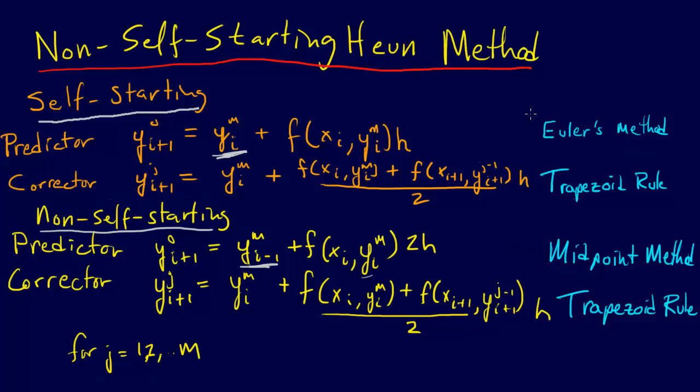And so the big difference here is this uses Euler's method in the predictor step, whereas the non-self-starting Heun method uses the midpoint method using y_i and y_i-1 instead of just y_i as in the Euler's method. And the corrector ends up being basically the same thing, and then we iterate for j equals 1 to m, and so that's what these m's and j's, superscript j's, are all about.